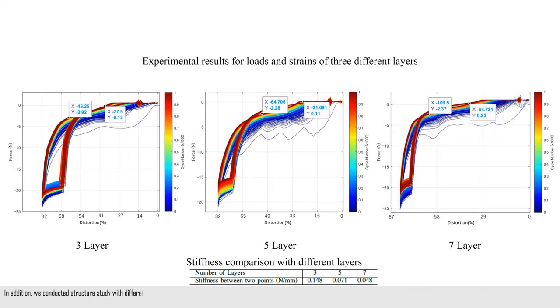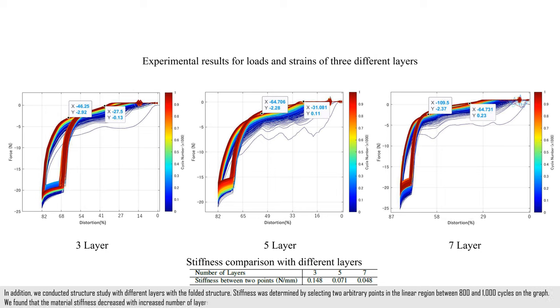In addition, we conducted structure study with different layers with the folded structure. Stiffness was determined by selecting two arbitrary points in the linear region between 800 and 1,000 cycles on the graph. We found that the material stiffness decreased with increased number of layers. Significant differences in load at maximum displacement were observed, potentially attributable to manual folding errors.